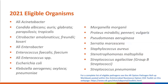Some of our most common organisms eligible for reporting to the AR option in 2021 are listed here. However, facilities and vendors should refer to our AR option pathogen roll-up workbook, which can be found in the antimicrobial resistance toolkit, for a complete list of eligible organisms. We've also developed an AR option pathogen roll-up reference guide to help navigate this workbook and determine which codes are accepted into the NHSN application.